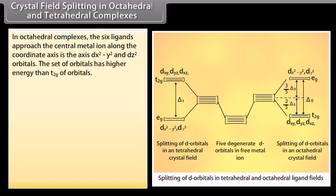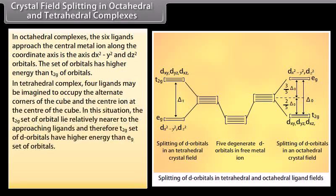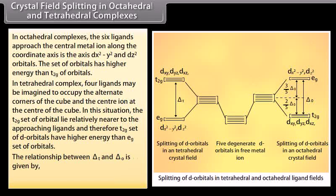Crystal Field Splitting in Octahedral and Tetrahedral Complexes: In octahedral complexes, six ligands approach the central metal ion along the coordinate axes; the dx²−y² and dz² orbitals (eg set) have higher energy than the t2g set. In tetrahedral complexes, four ligands occupy alternate corners of a cube with the central ion at the center; the t2g set lies relatively nearer to the approaching ligands and has higher energy than the eg set. The relationship between the splitting energies is: Δt = (4/9)Δo.